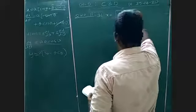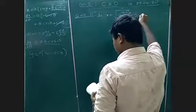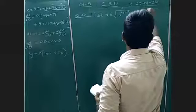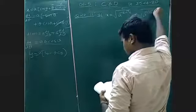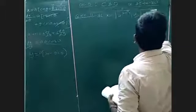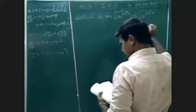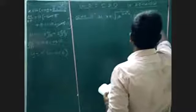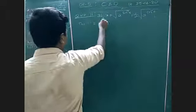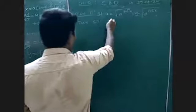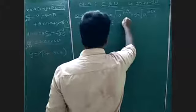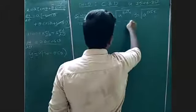Y is equal to square root of a to the power of cos inverse t. Then show that dy/dx = minus y by x.